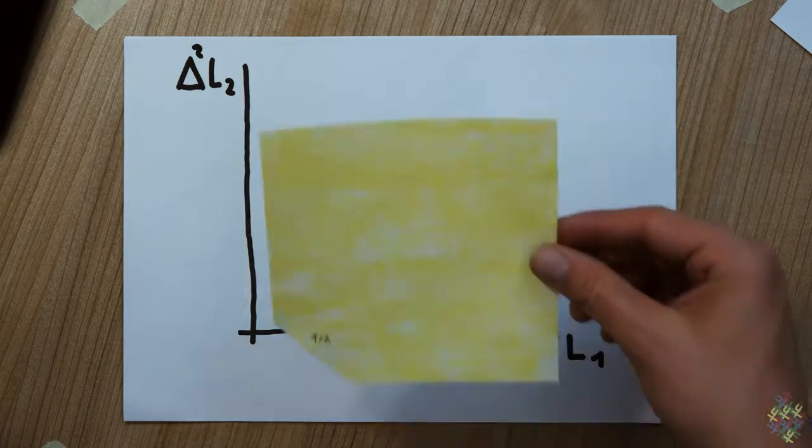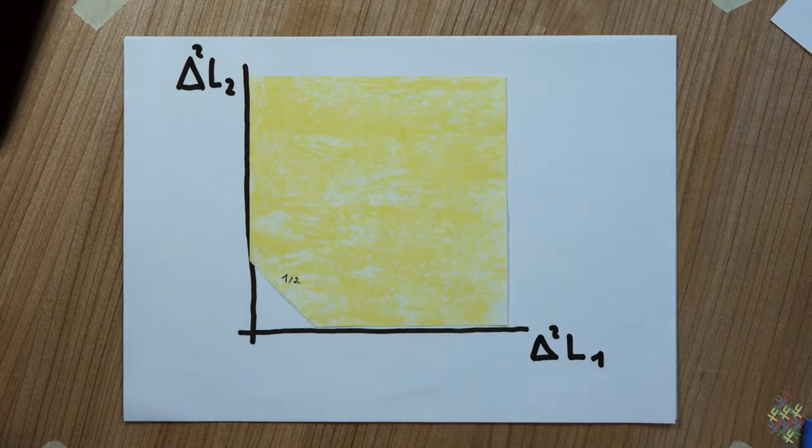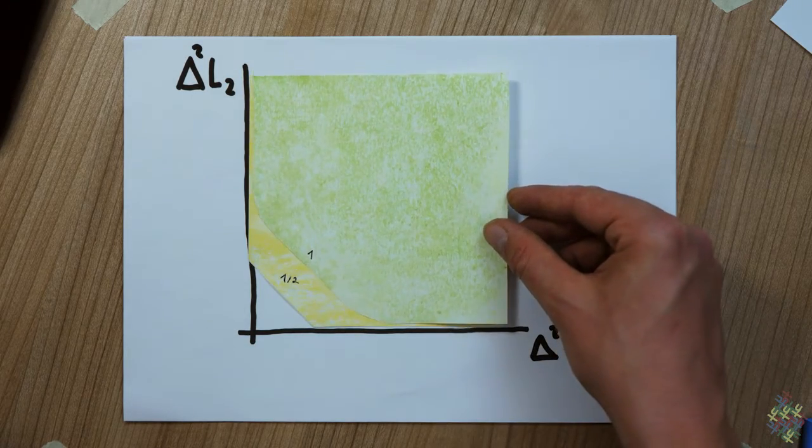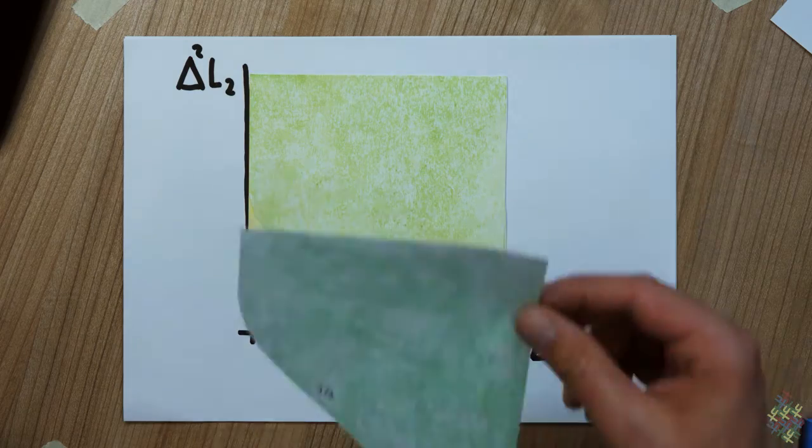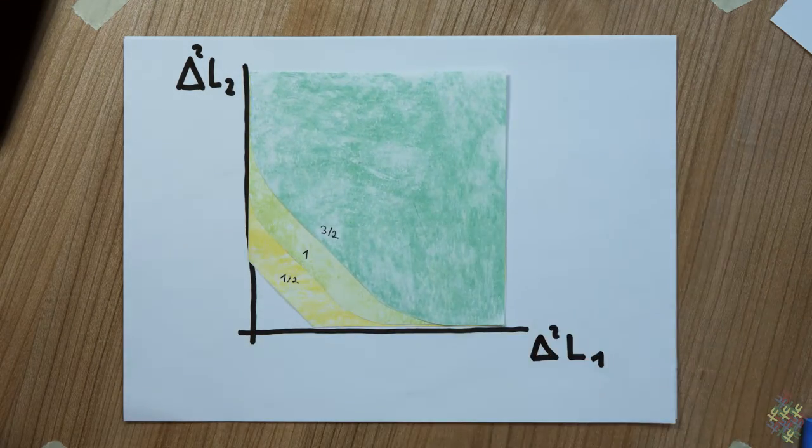So here are the diagrams for two angular momentum components for various values of the angular momentum quantum number s: one half, one, three half, two, and so on.